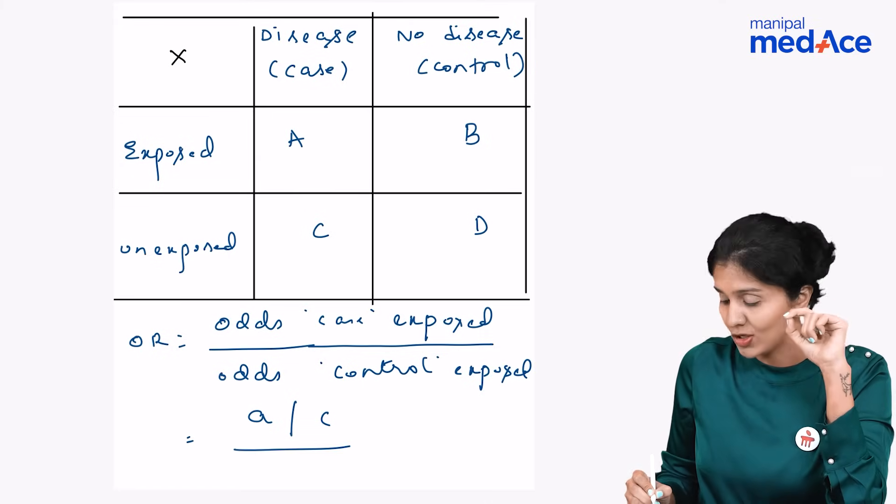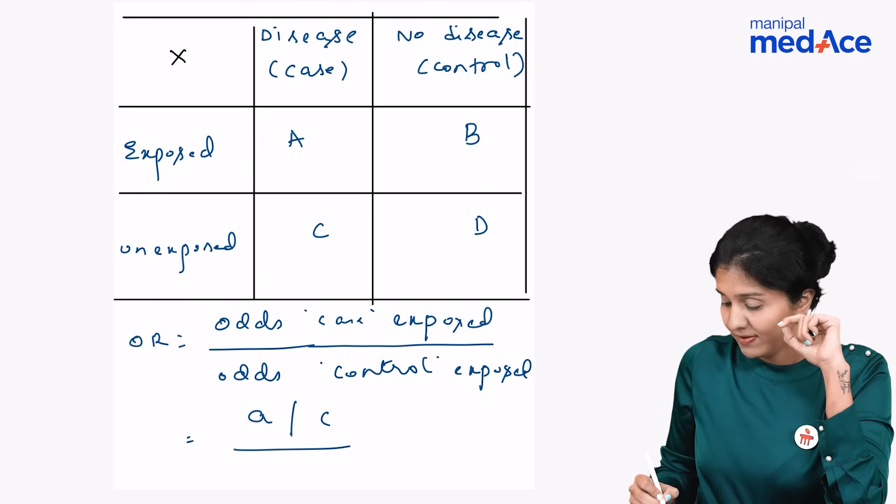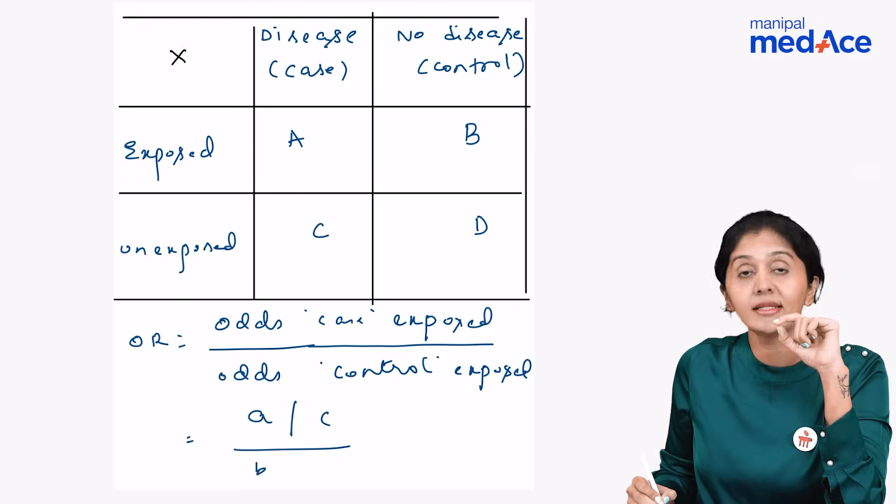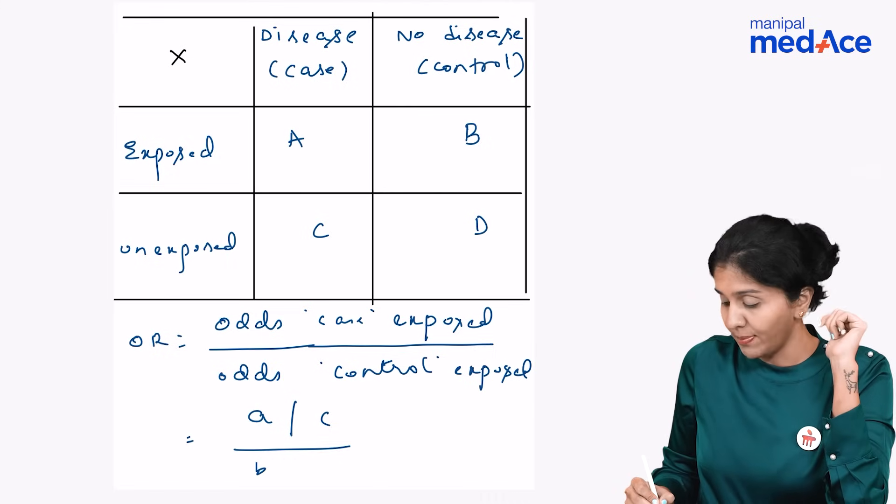Similarly, we have the denominator that is odds that a control was exposed. We have B, that is probability that a control was exposed, and probability that a control was not exposed.